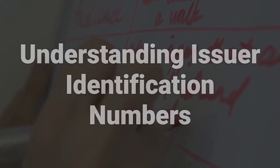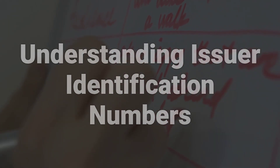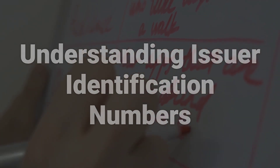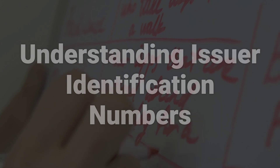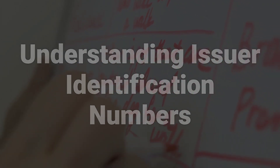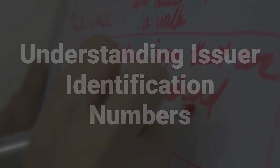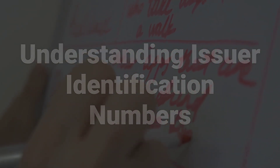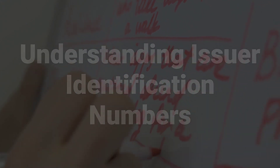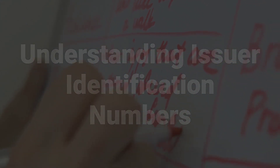The entire string of numbers, which identify the card network, the financial institution that issued the card, and the individual the card belongs to, is often referred to as the primary account number, or PAN.